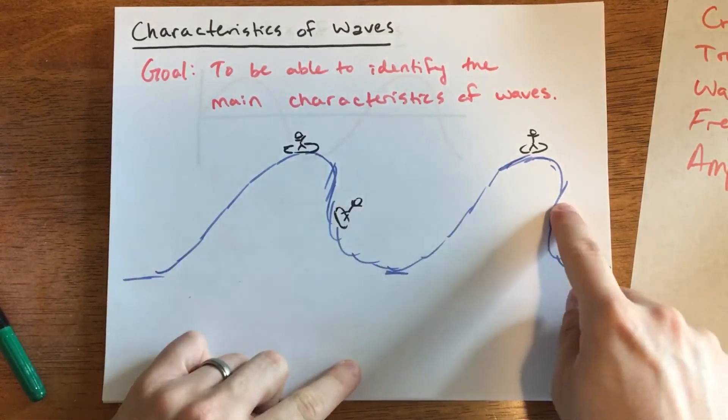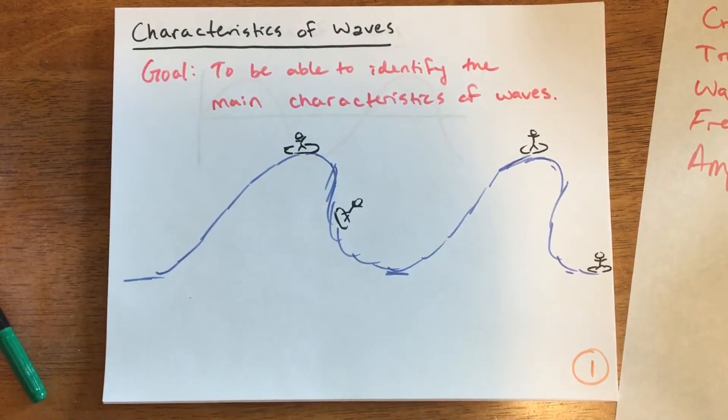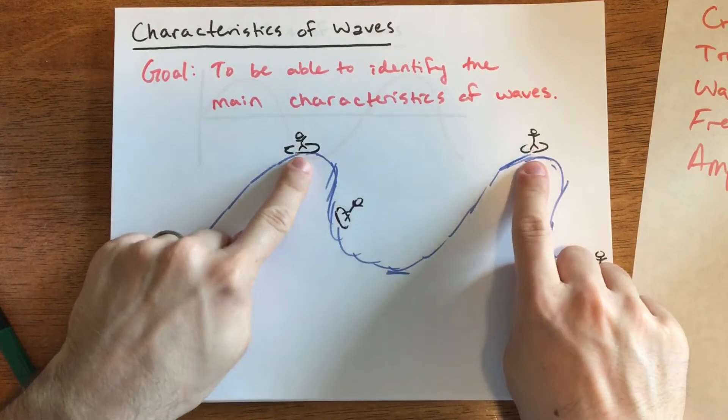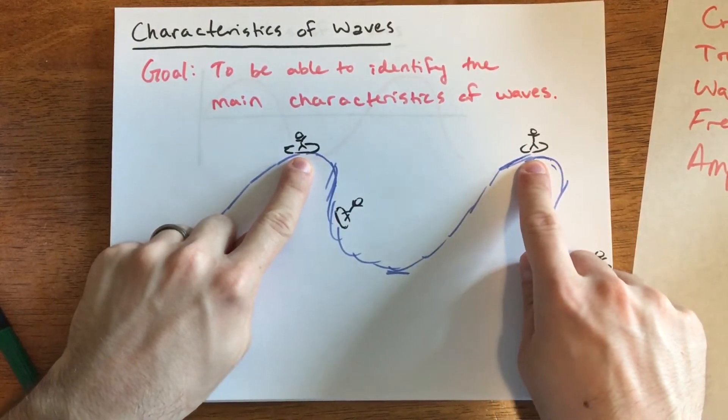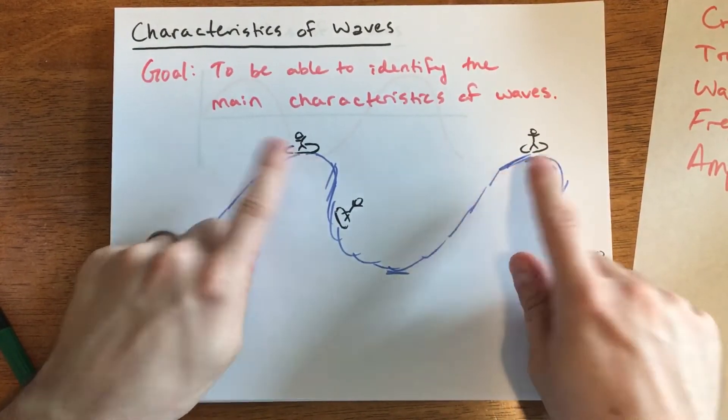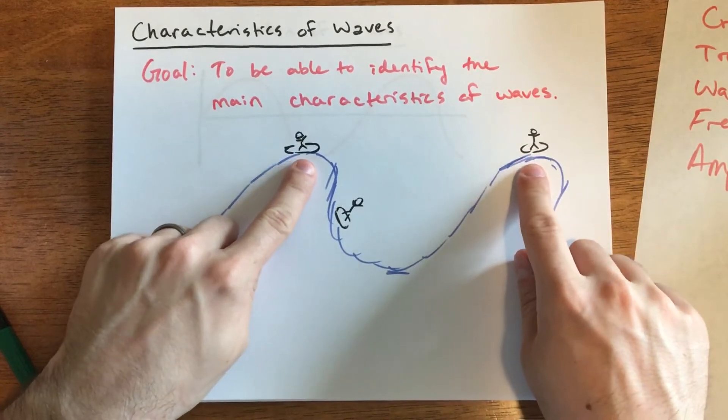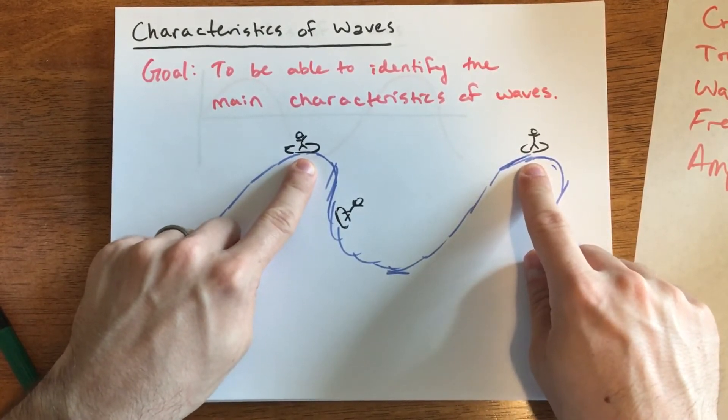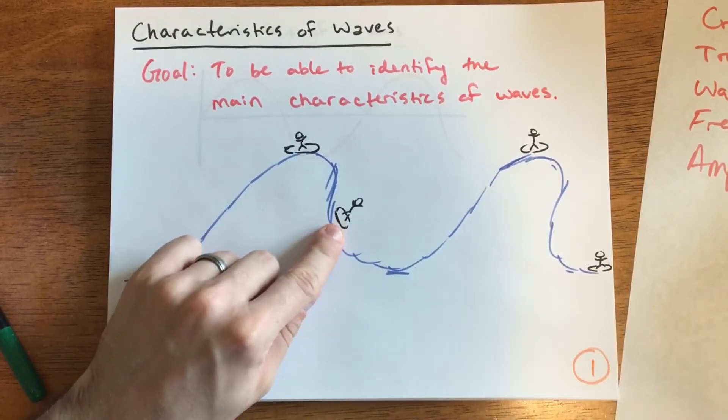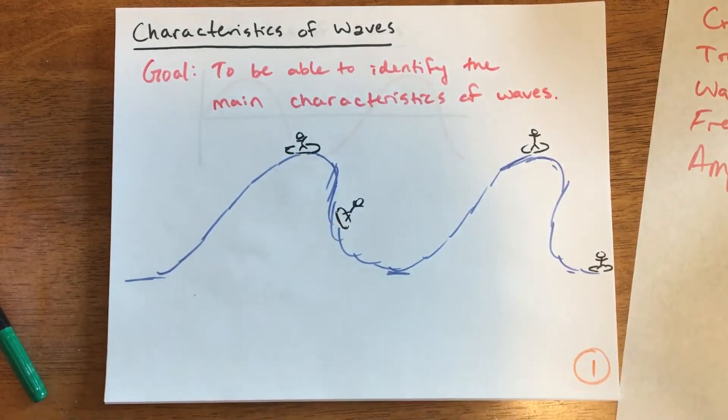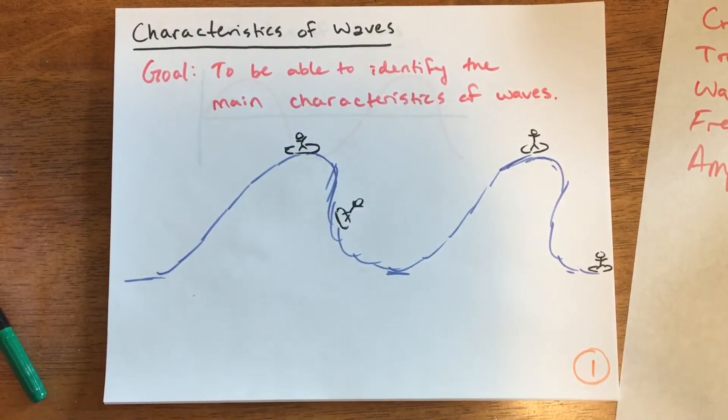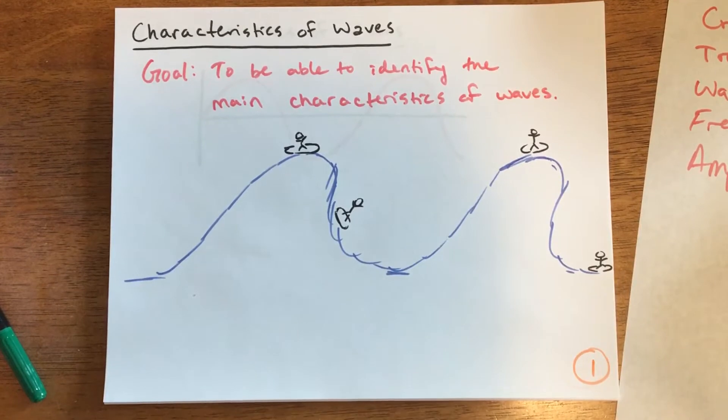This surfer is only about halfway up. We can talk about how surfers at the top of the wave have much more energy because of gravitational potential energy—the water is higher up. The surfer in the middle has less potential energy, and the one at the bottom has the least.